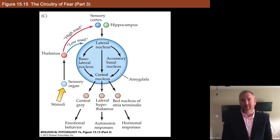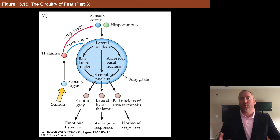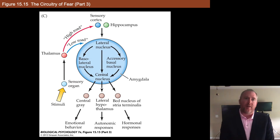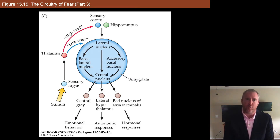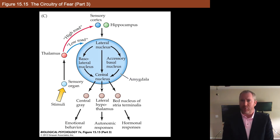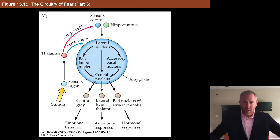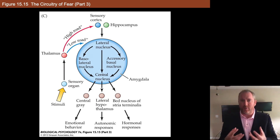Here you can see a more fine-tuned amygdala-centric view of these high and low roads of fear circuitry. Information comes in through the sensory systems, processed by the thalamus — the big switchboard — then some signal is relayed along the high road to the cortex and processed by the hippocampus, while another low road goes directly to the amygdala, where it converges with information arriving from the high road. The information is first received by the lateral nucleus of the amygdala, then splits among three circuits: the basolateral amygdala, the accessory basal nucleus, and the central nucleus of the amygdala.